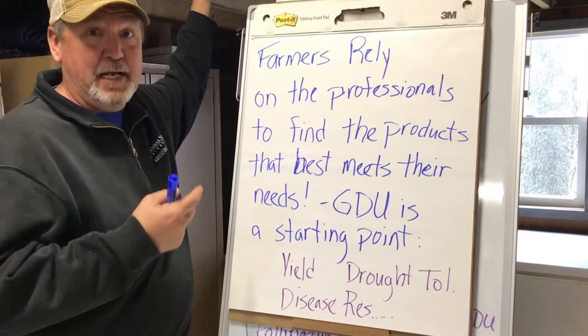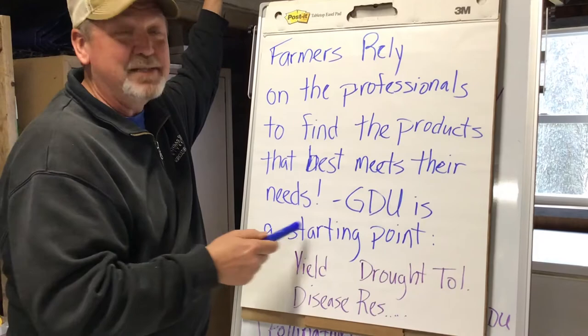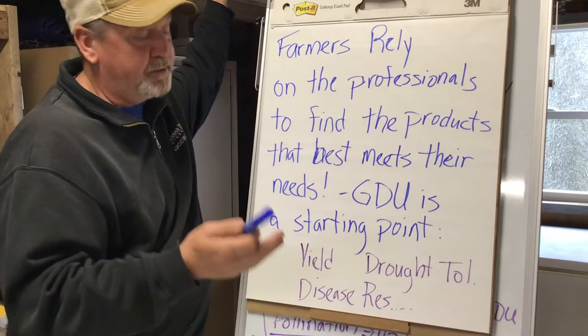Farmers rely on professionals like their seed dealer, their agronomist, and their own experience to find the products that best meet their needs. Growing degree units are a starting point. They're also going to look at things like yield, drought tolerance, disease resistance, and lots of other possibilities that can help narrow down the choice of corn variety.